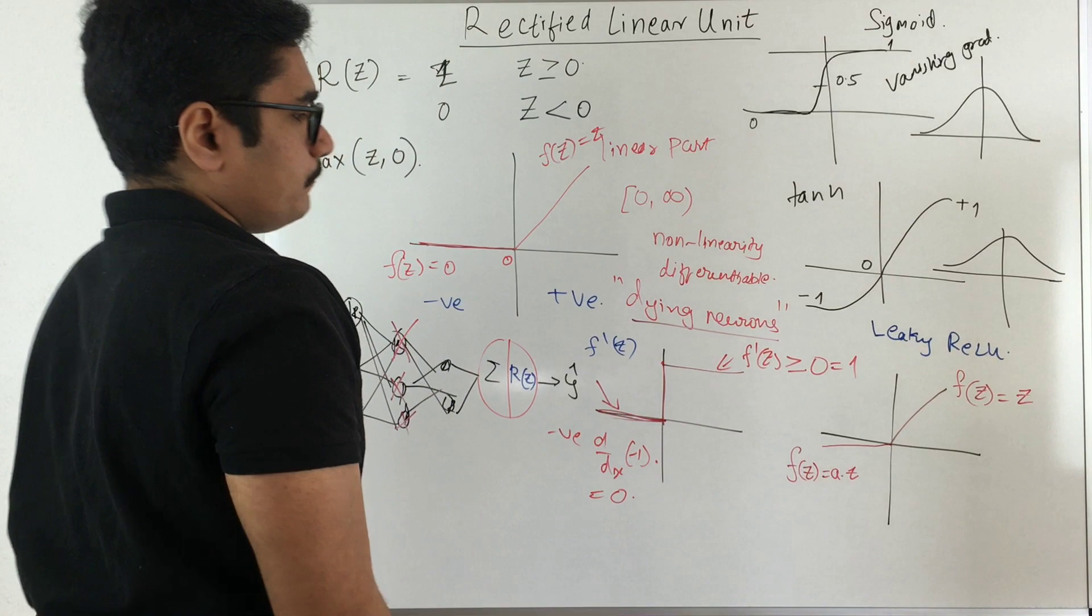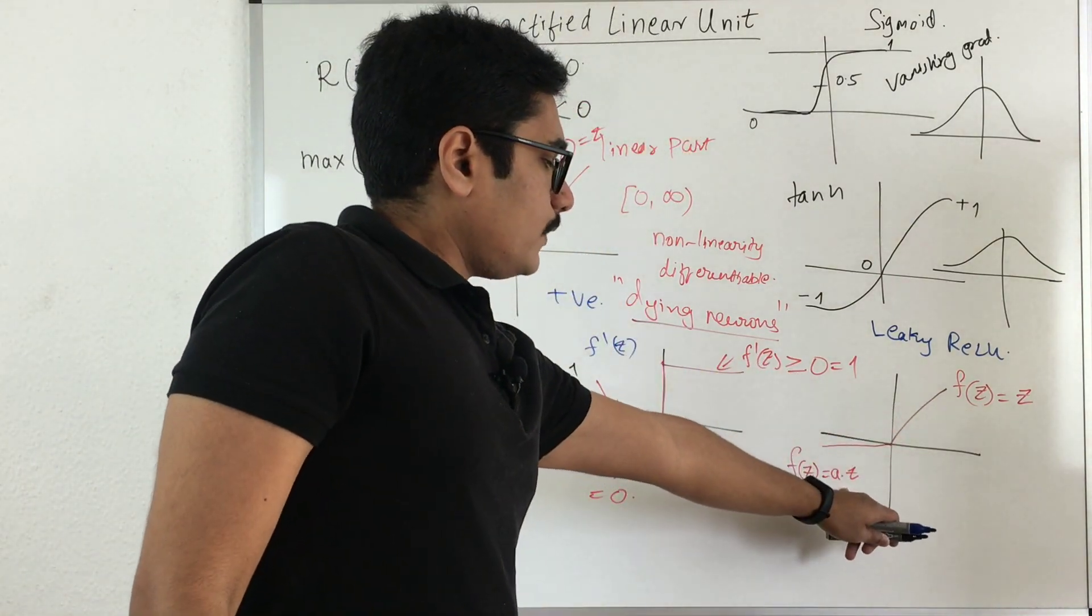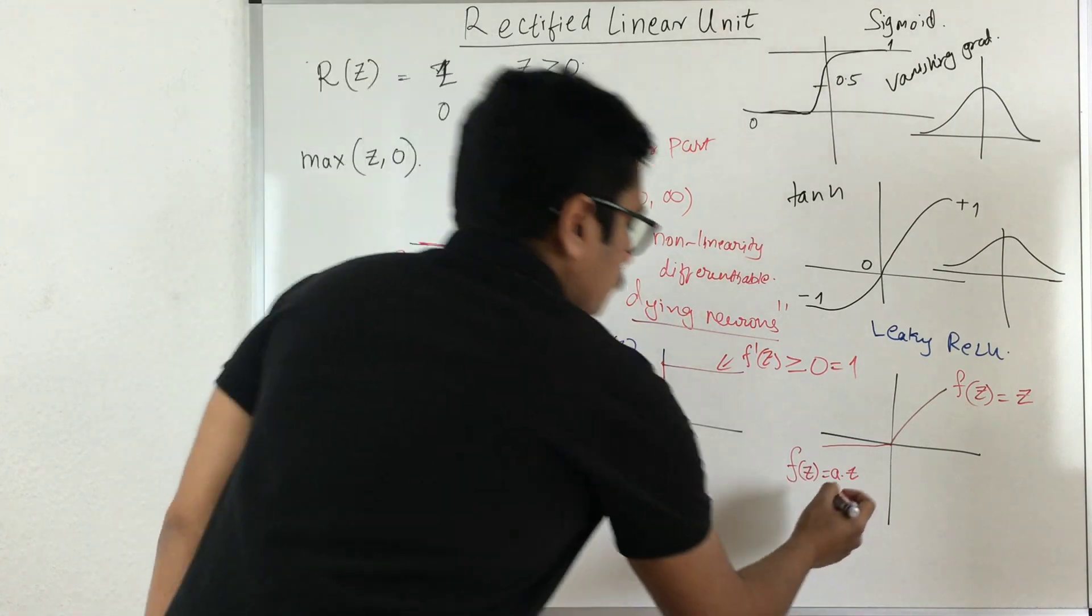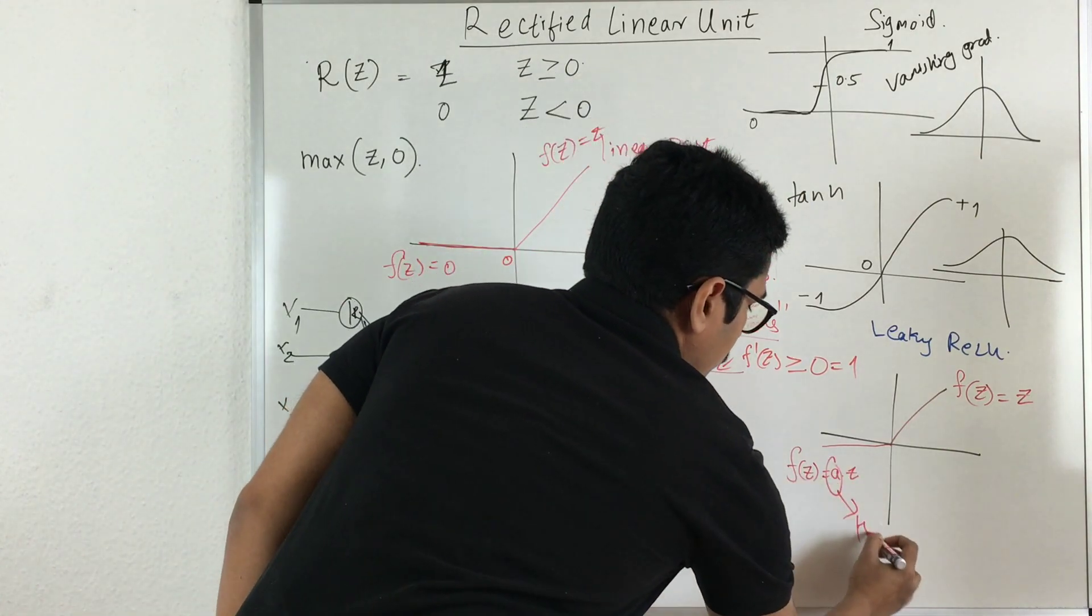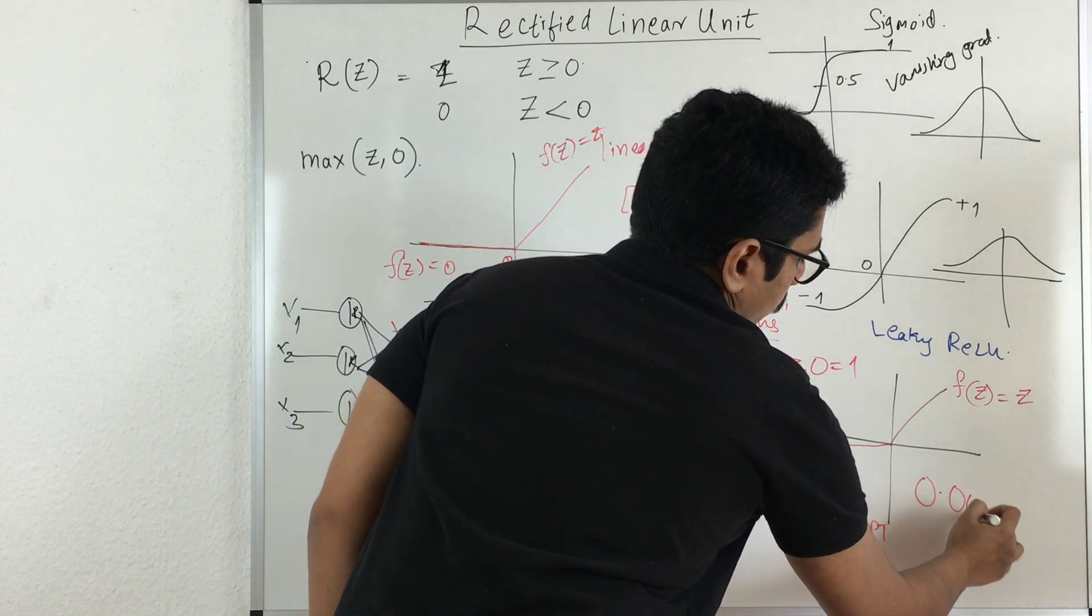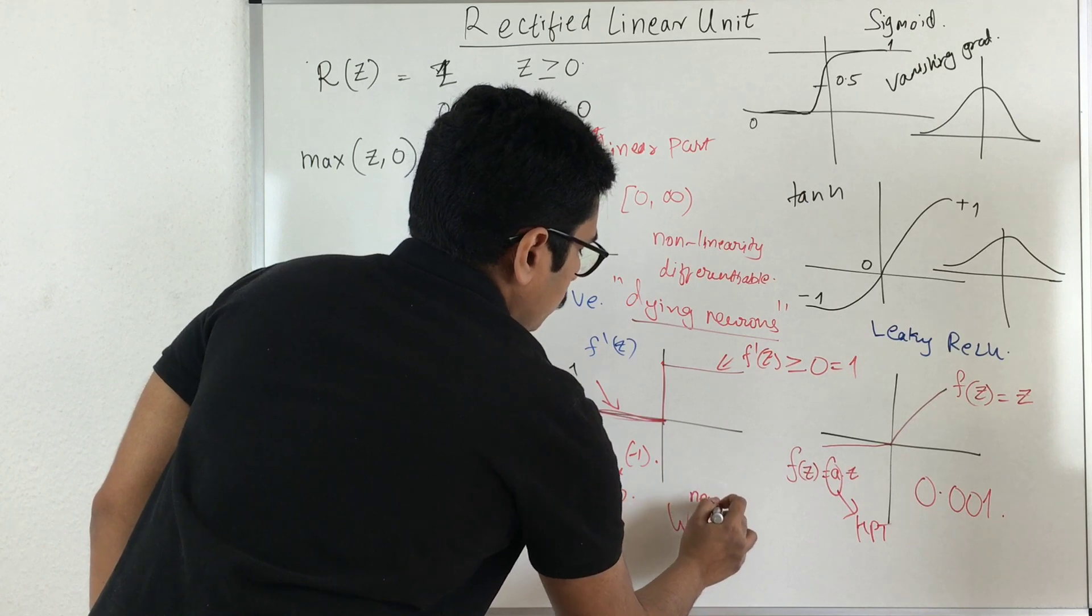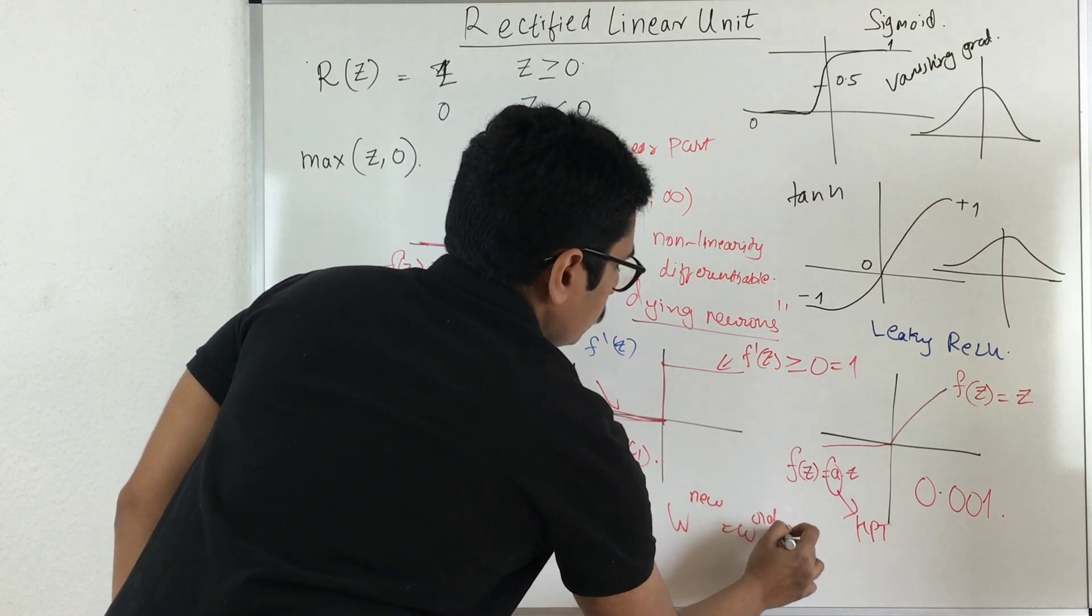And here f of z is equal to z, that is for greater than equal to zero. For less than zero you have a into z. So this is again a hyperparameter that you decide. So usually in most of the cases this is kept as 0.001.